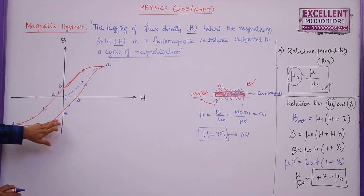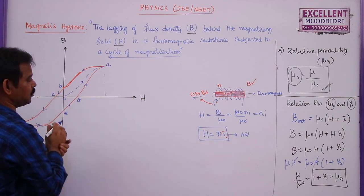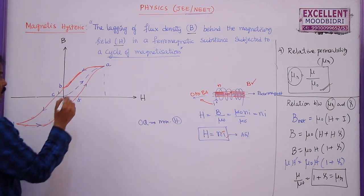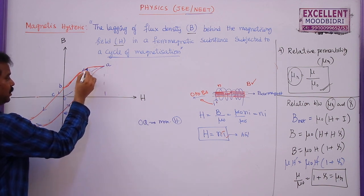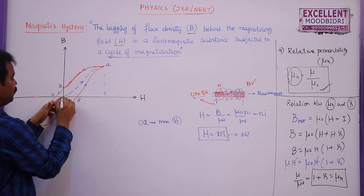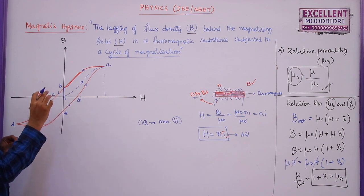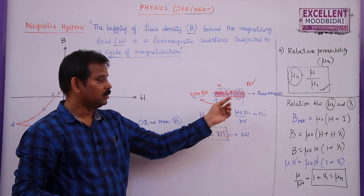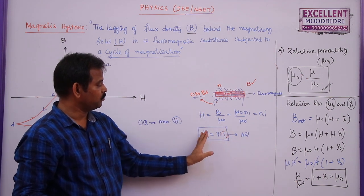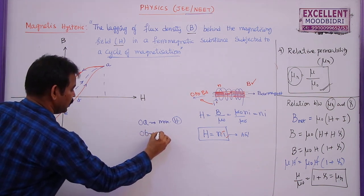From the curve: O to A represents the maximum magnetizing field applied. When H is reduced to 0 but B is not zero, this retained magnetism is the key property. When H = 0 (i.e., current = 0), the iron piece retains its magnetic properties. The value OB — the flux density remaining when H = 0 — is called retentivity.